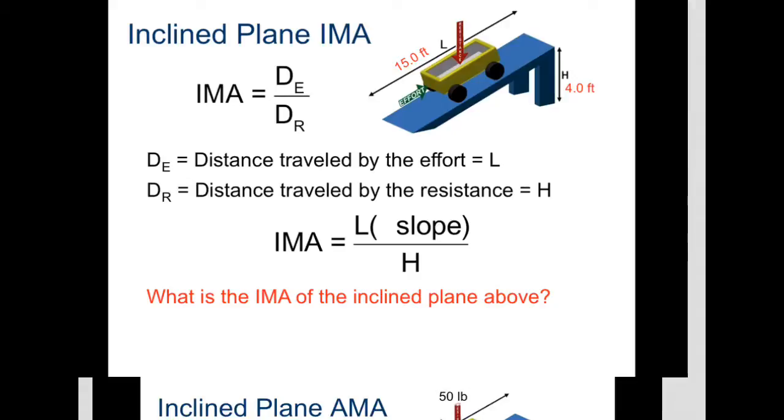However, the distance of the effort, usually for wheels and axles we think about the diameter or the circumference of the wheel or something like that, and then the diameter or circumference of the axle. But for this, the distance of the effort is just how much you're going to travel up the inclined plane. So the distance of the effort is distance traveled, they call that L, it's that slope length.